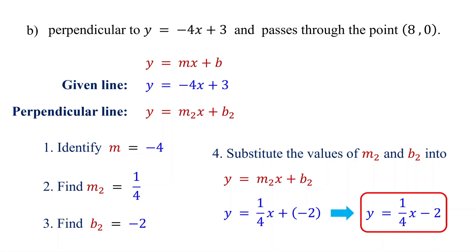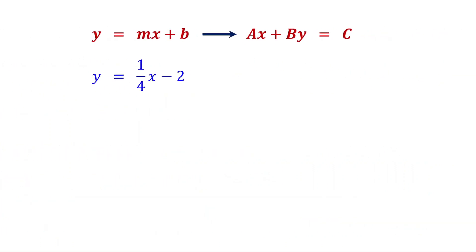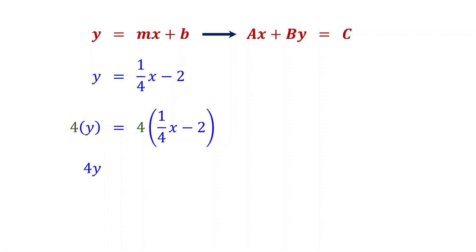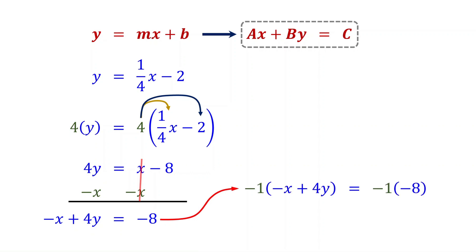This is the equation of the perpendicular line in slope-intercept form. To convert the slope-intercept form to standard form, first eliminate the fraction by multiplying both sides of the equation by the denominator. On the left, you get 4y. On the right, distribute the 4. 4 times one-fourth x is x, as the 4s cancel. 4 times negative 2 is negative 8. Then, move the x term to the left by subtracting x from both sides. On the left, you get negative x plus 4y. On the right, these cancel, leaving negative 8. Remember, in standard form, the coefficient of x should be positive, but here it is negative. To make it positive, multiply both sides of the equation by negative 1. Multiplying by negative 1 simply changes the sign of each term. This is the equation of the perpendicular line in standard form.